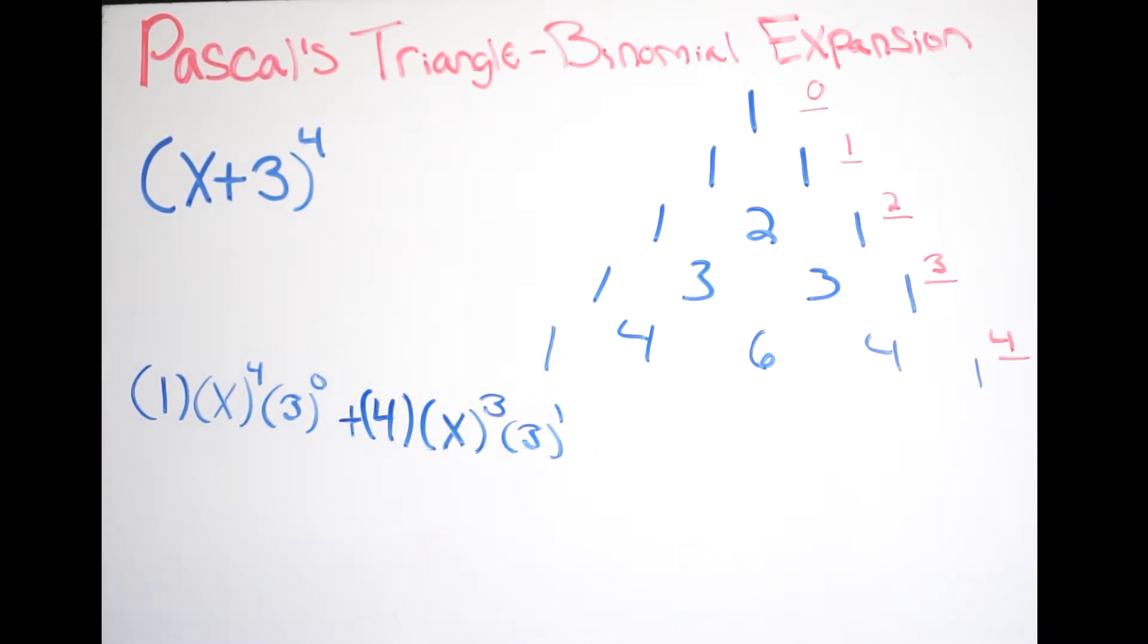And then we add one on our exponent on our second term. Just like this. And you're going to continue on with this pattern. So plus, my next coefficient is six. Here comes my term, my first term. So again, minus one, now it's to the second power. And then I get three to the second power.